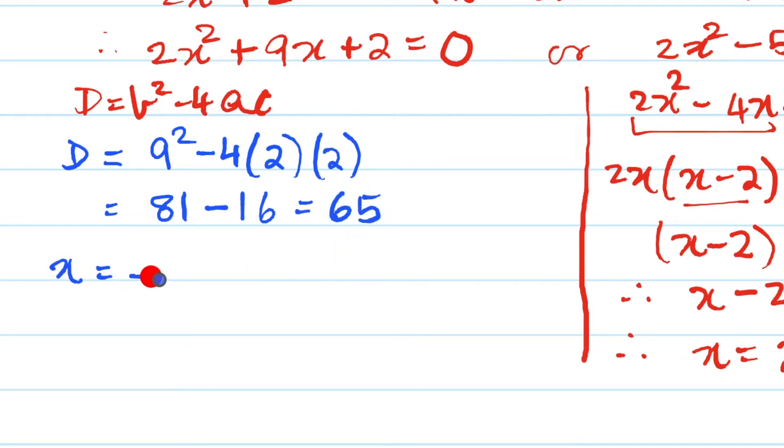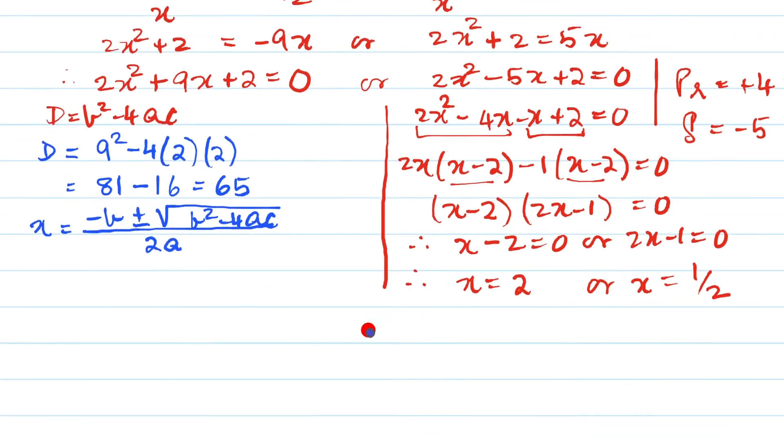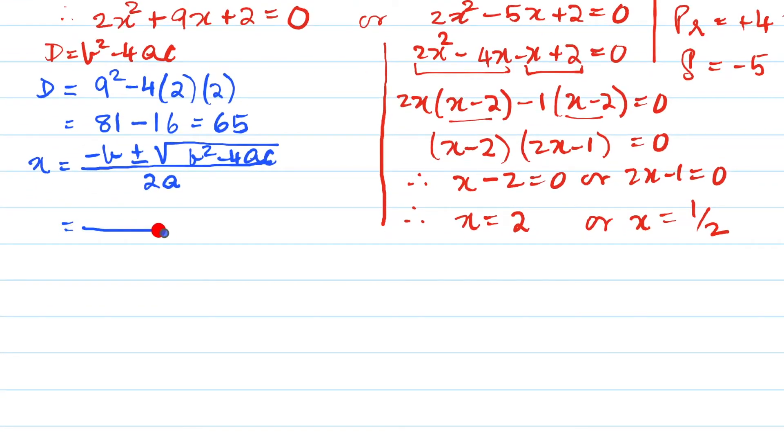So our x is going to be first we write the formula which is -b ± √(b² - 4ac) / 2a. So we write the formula first and then we will substitute the values. So minus b minus b means -9 ± √65 and that upon 2 into a what is our a here this is 2. So we will get it as -(-9) ± this will be 8 point something.